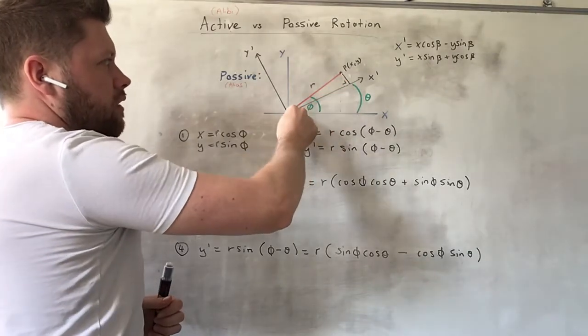So the relevant triangle is now this one, the red radius r, the perpendicular projection here, and the coordinate part here along the x-dash axis. So it's this triangle here that we're now dealing with.